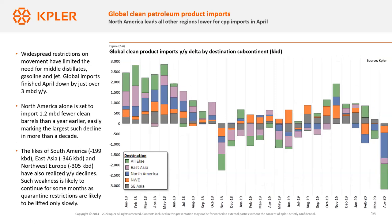Looking at the year-over-year change in clean product imports — the data speaks for itself. In North America alone, arrivals for the month of April are down 1.2 million barrels per day — truly historic — and these declines extend to most places globally. This builds on the fact that you're going to probably have Chinese refiners pumping a lot of clean products into the market, even though refinery utilization rates are lower in other parts of the world, on top of demand for clean products falling at a rate we have really not seen in a very long time.